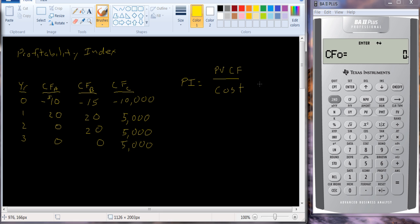And what we're looking for is one that's greater than one. So if the profitability index is greater than one, we want to accept the project. If it's less than one, we want to reject the project. And if it's equal to one, we're indifferent.